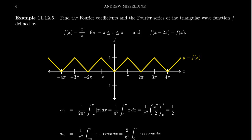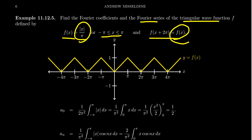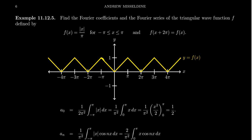In this video we want to find the Fourier series that represents the triangular wave function given by the formula f(x) equals the absolute value of x over pi, when x is between negative pi and pi. We also define it to be 2pi periodic, so as you shift by 2pi units it repeats. The graph from negative pi to pi is basically just the absolute value function, scaled down so that at x equals pi the y-coordinate equals 1. That's not necessary, but it makes the Fourier series a little bit cleaner.